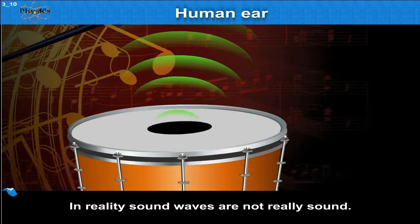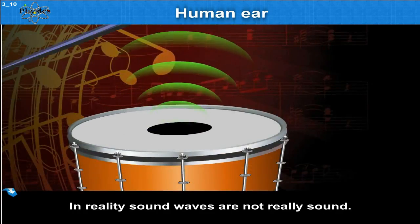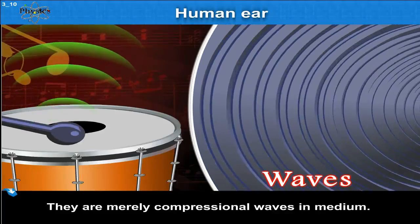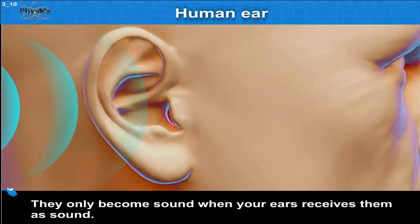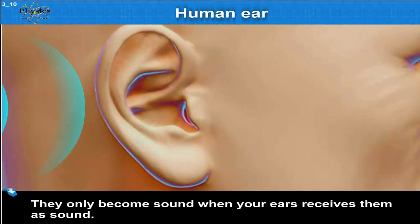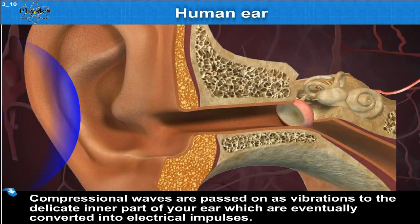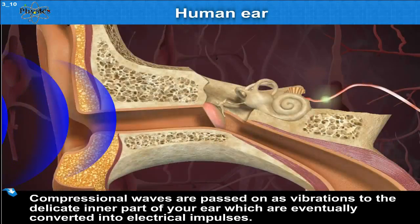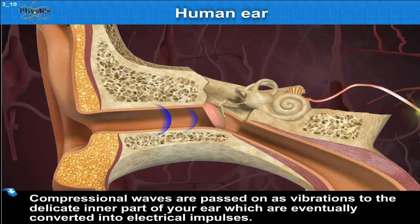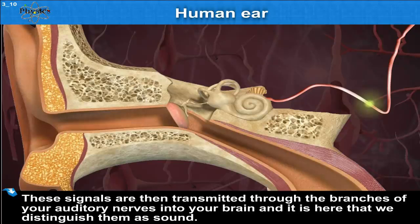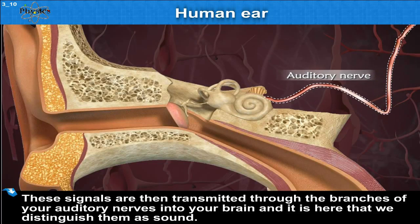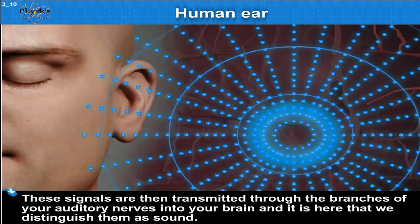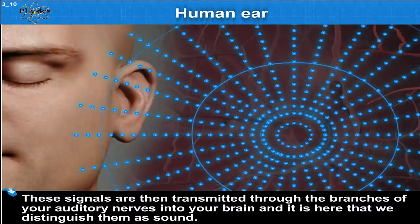The human ear. In reality, sound waves are not really sound. They are merely compressional waves in a medium. They only become sound when your ears receive them as sound. Compressional waves are passed on as vibrations to the delicate inner part of your ear, which are eventually converted into electrical impulses. These signals are then transmitted through the branches of your auditory nerves into your brain, and it is here that we distinguish them as sound.